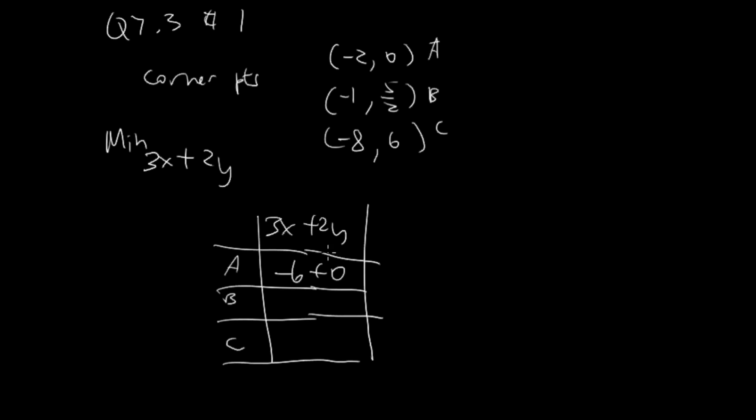0 times 2 is 0. For point B we have -1 times 3, so -3, plus 5/2 times 2 which is 5. For point C we have -8 times 3 is -24 plus 2 times 6 which is 12.